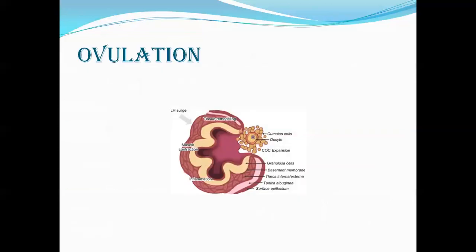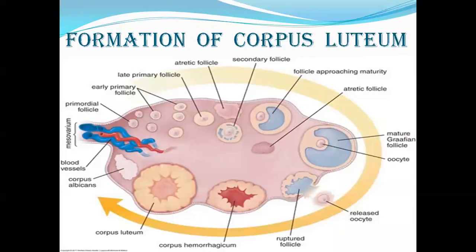For expulsion, muscular contraction is required: prostaglandin F2α and oxytocin induce thecal muscle contraction and final expulsion of the oocyte. There is also tissue remodeling — the granulosa cells and thecal cells left behind now form the corpus luteum. After the oocyte is expelled, a blood-filled cavity called corpus haemorrhagicum forms.